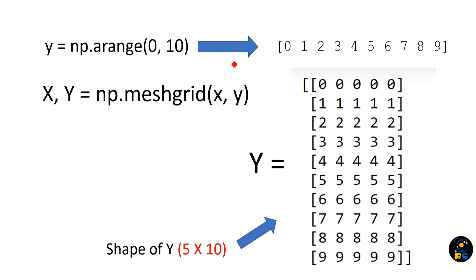If you check Y, which is a one-dimensional array from 0 to 9 (10 is not included), you can see that after Y goes to the meshgrid function, the new Y comes out with every element replicated to the row. This is the meshgrid function.